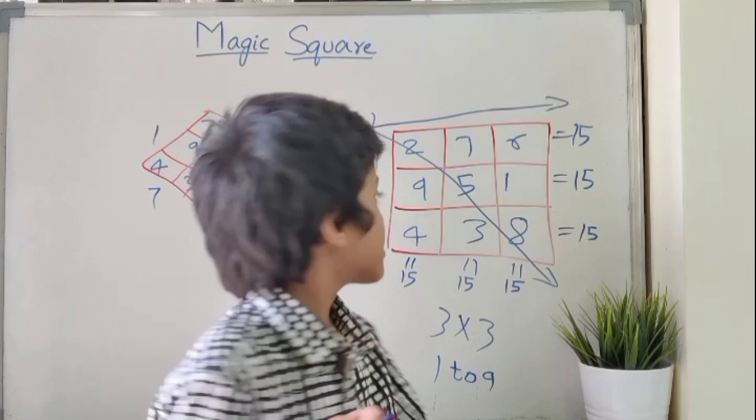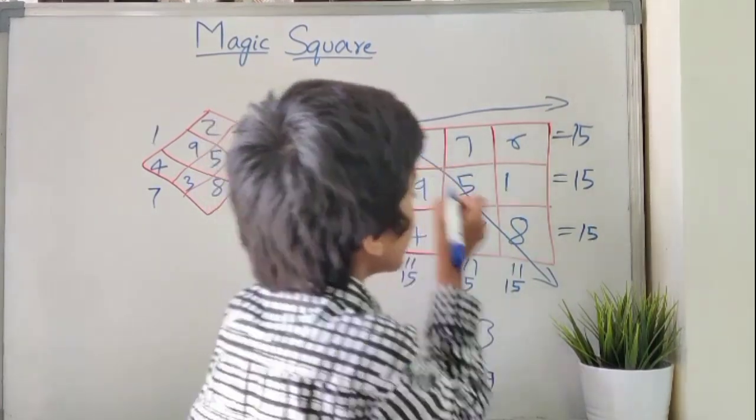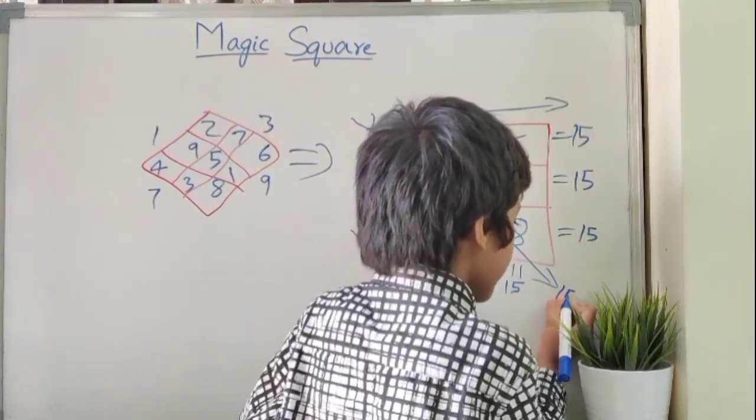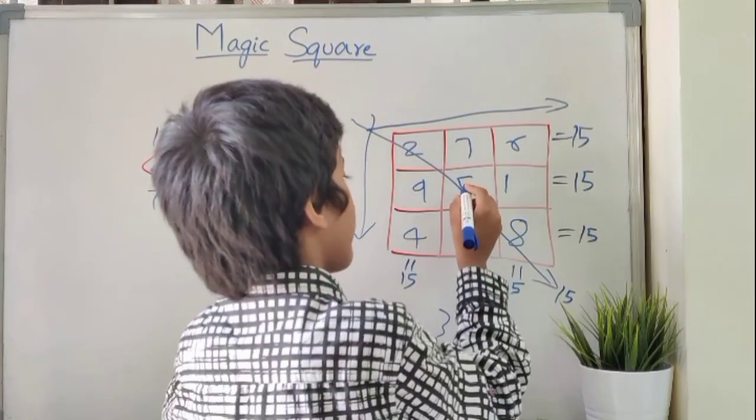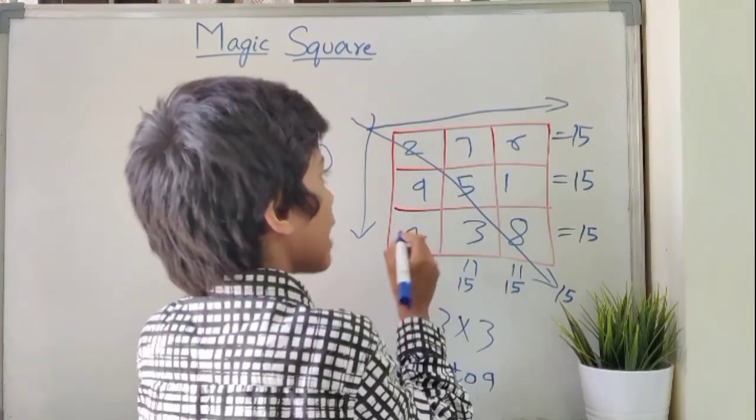Now let's calculate the diagonals. 5 plus 2 is 7, 7 plus 8 is 15. 5 plus 4 is 9, 9 plus 6 is 15.